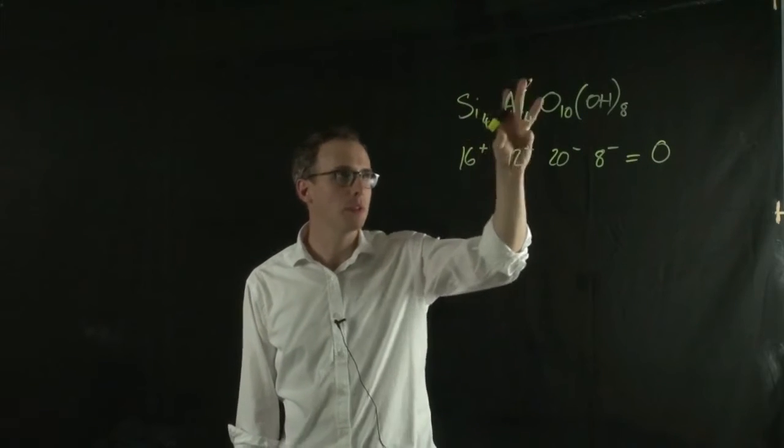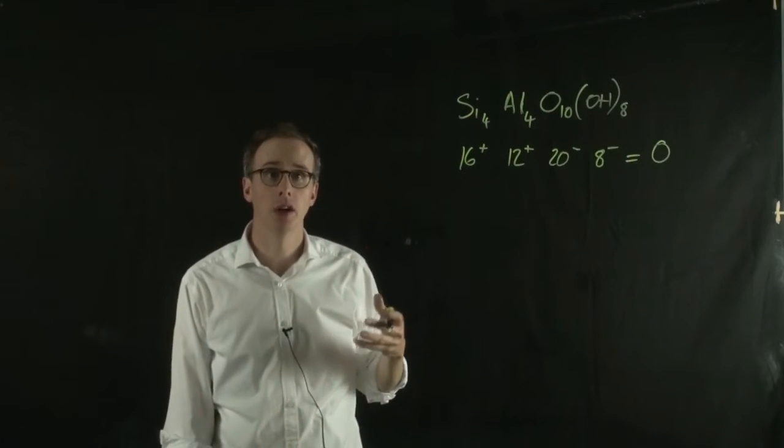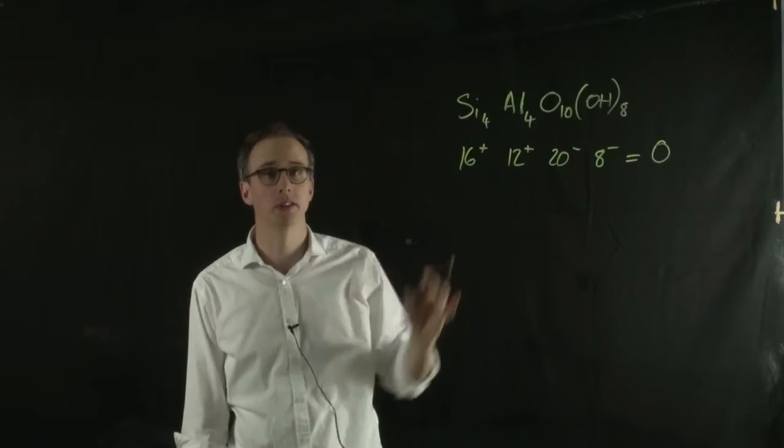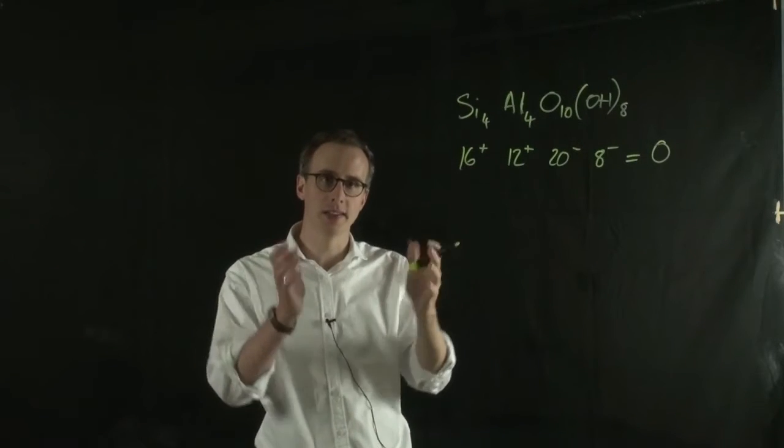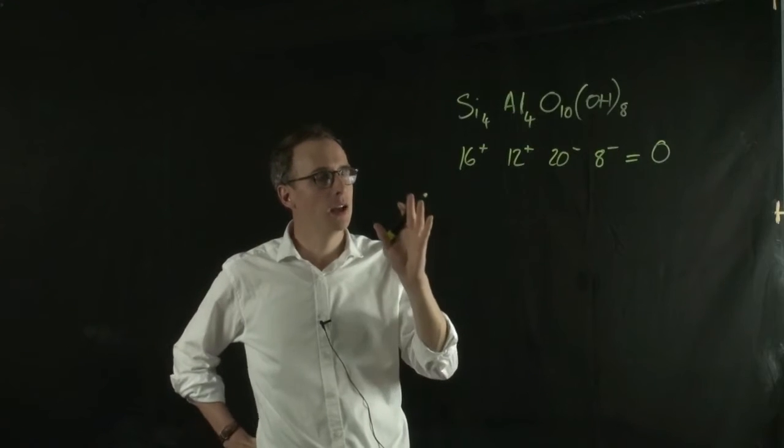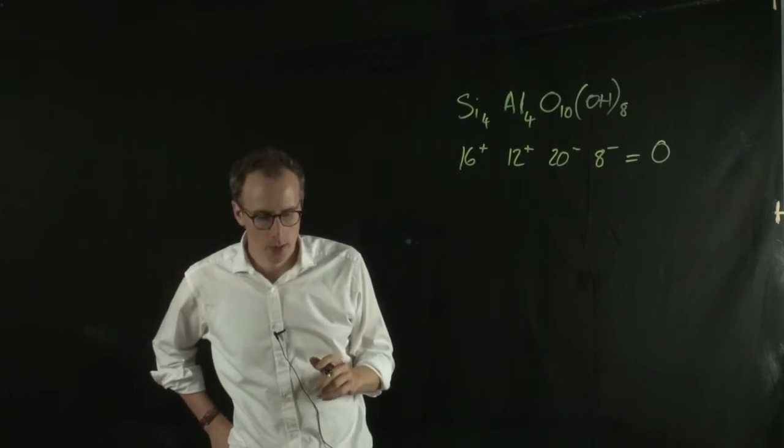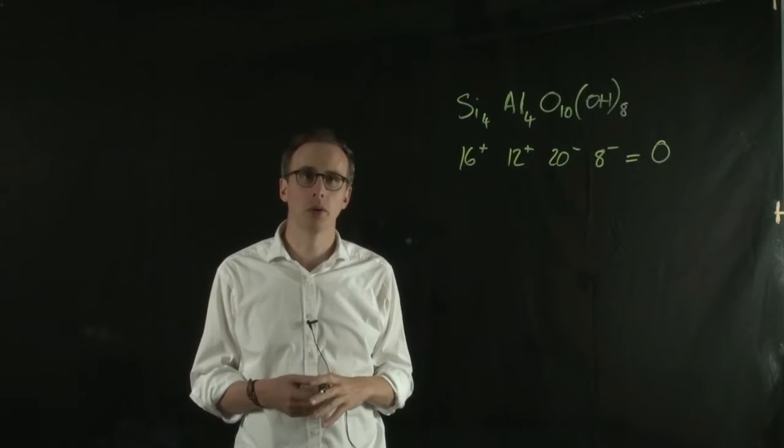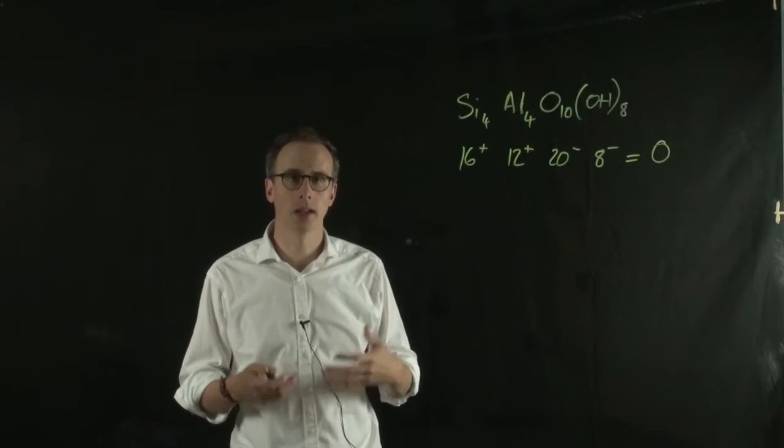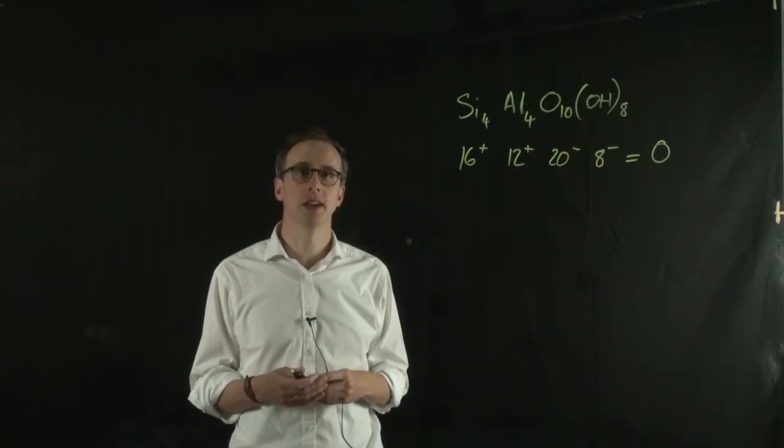So this arrangement of atoms makes chemical sense with respect to charge balance, but actually when you look at the mineral overall, because the mineral has edges, that gives the clay mineral a slight negative charge. And it's that slight negative charge which makes clays have an interesting property chemically when they're in the environment. And that chemical property is called cation exchange.